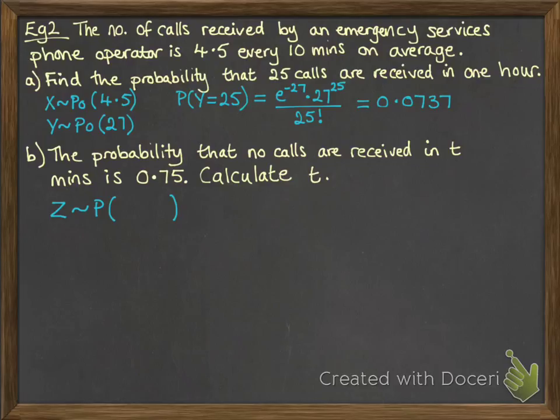The probability that no calls are received in t minutes is 0.75, and we want to calculate what t has to be to make that happen. So again, we have another variation on this distribution. So we'll call it Z. We're not quite sure what the time interval is - we're going to work that out.